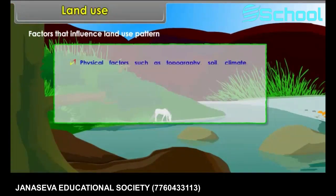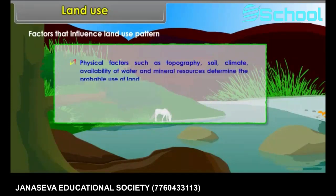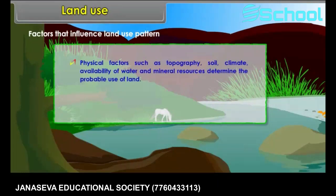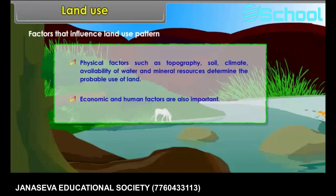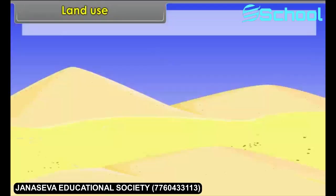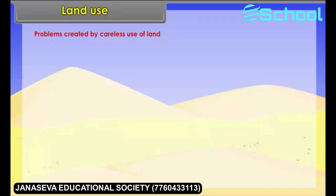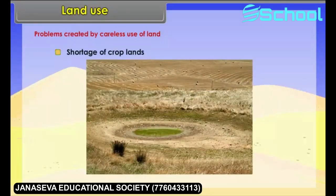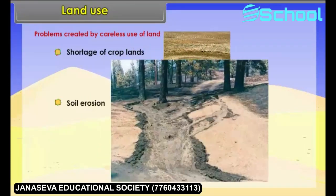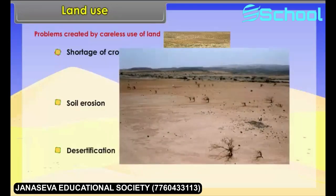Physical factors such as topography, soil, climate, availability of water, and mineral resources determine the probable use of land. Economic and human factors are also important. Some serious problems created by careless use of land include shortage of crop lands, soil erosion, and desertification.